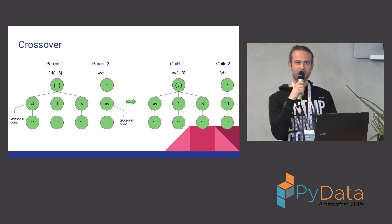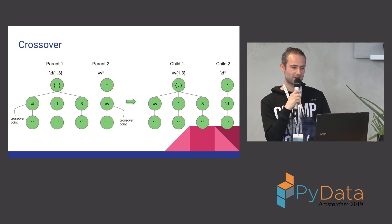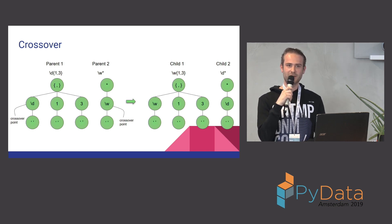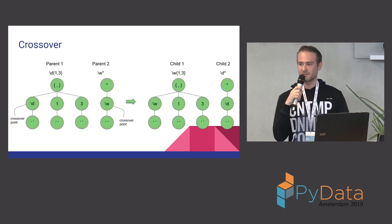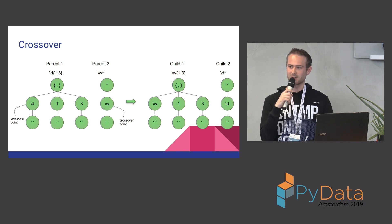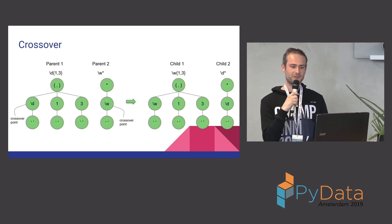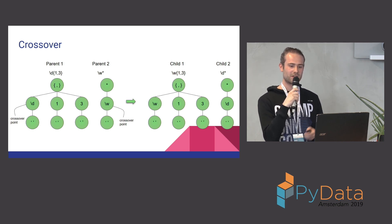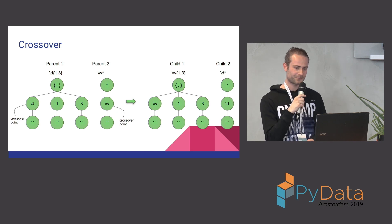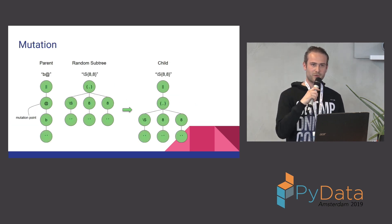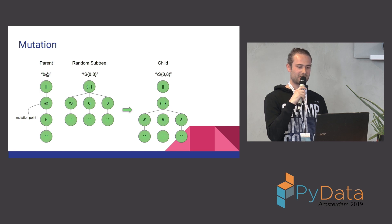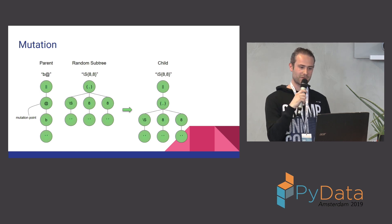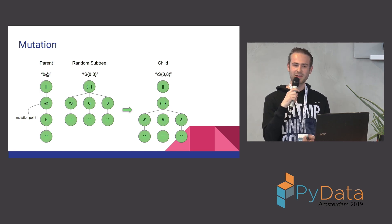This is an example of crossover. We have two parents with their own trees. We select a random node in each of the trees as a crossover point. What you basically do is swap the subtrees from those crossover points to create two new individuals. You can see we have a \d and a \w as crossover points, and in the child the two nodes have been swapped.